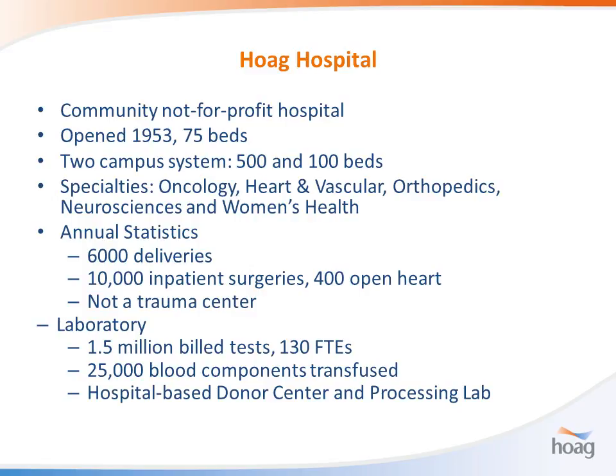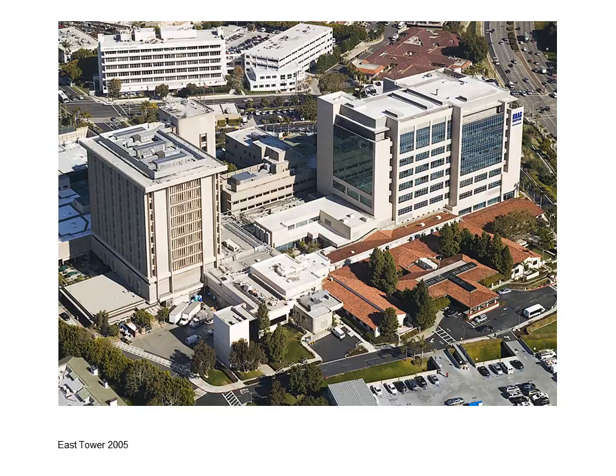A little bit about Hoag Hospital — we're in Newport Beach with two campuses, 500 and 100 beds. We are not a trauma center, but have a very busy labor and delivery unit. The laboratory is moderate size, about 1.5 million billed tests on 130 FTEs. This is a picture of our Newport Beach campus, the East Tower. The big one opened in 2005, and right there is Pacific Coast Highway. There are beautiful views of the ocean from the seventh floor, but the lab is in the basement.